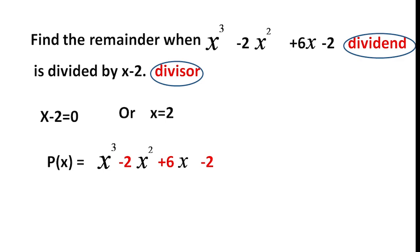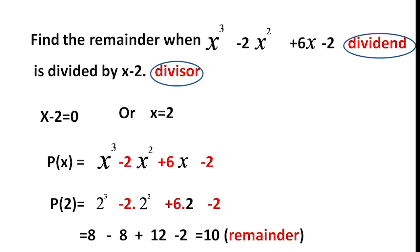P of x, the dividend, is x cubed minus 2x squared plus 6x minus 2. Instead of x, we put 2. So P of 2 is 2 cubed minus 2 times 2 squared plus 6 times 2 minus 2. That gives us 8 minus 8 plus 12 minus 2, which equals 10.